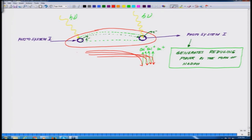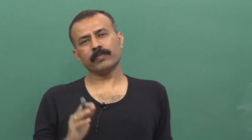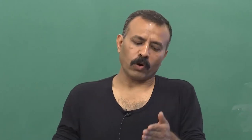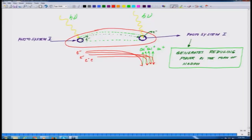Light falls on both photosystem 1 and photosystem 2; electrons have been ejected from the chlorophyll molecules in both. The electron ejected from photosystem 1 generates the reducing power in the form of NADPH. At this stage, the chlorophyll molecules present at photosystem 1 are all oxidized and need to be brought back to their ground state by the electrons supplied from photosystem 2.